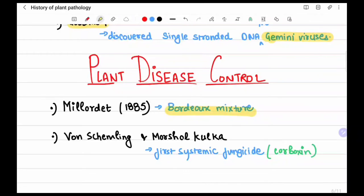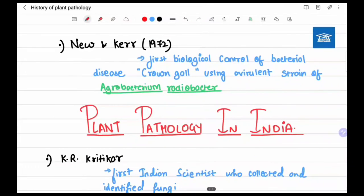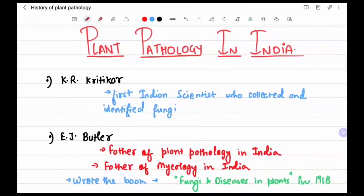For plant disease control: Millardet developed the Bordeaux mixture. Shemling and Kulka developed the first systemic fungicide, also known as carboxin — a favorite examination question. Newkirk in 1972 achieved the first biological control of a bacterial disease, crown gall disease, using avirulent strains of Agrobacterium radiobacter.